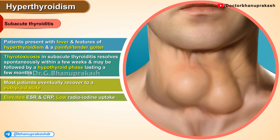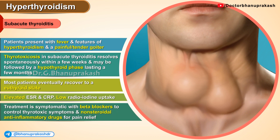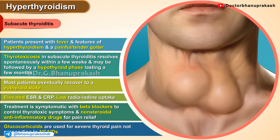Elevated levels of ESR and CRP along with low radioiodine uptake is also seen in these patients. Treatment is symptomatic with beta blockers to control thyrotoxic symptoms and NSAIDs for pain relief. Glucocorticoids are also used for severe thyroid pain not responding to NSAIDs.